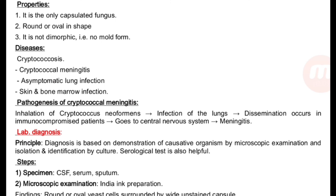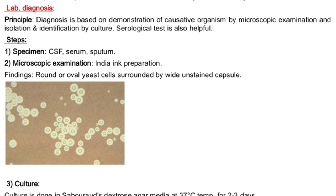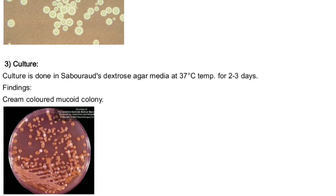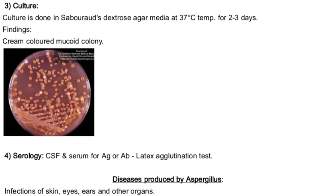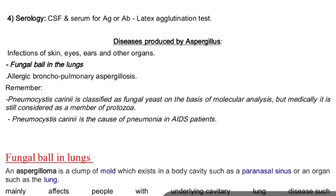Laboratory diagnosis — very important for viva: Cryptococcus neoformans is the only capsulated fungus. Specimen: cerebrospinal fluid, serum of the patient, and sputum. Microscopic examination: India ink preparation shows round or oval yeast cells surrounded by a wide unstained capsule — India ink does not stain the capsule, leaving a clear halo. Culture: same at 37 degrees Celsius — finding: cream-colored mucoid colony. Serology: CSF or serum tested for antigen or antibody by latex agglutination test.